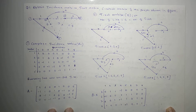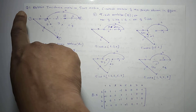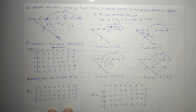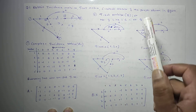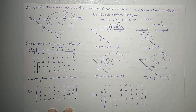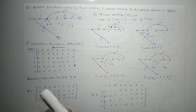Hello everyone. Last time we saw how to find the incidence matrix, tie-set matrix, and fundamental cut-set matrix. Now let us see problems based on this. The first problem asks us to obtain the incidence matrix, tie-set matrix, and f-cut-set matrix of the graph shown in the figure. From this graph we have to find all three matrices.